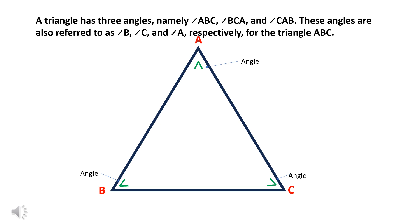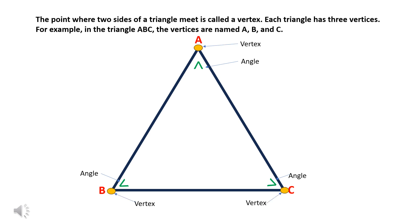The point where two sides of a triangle meet is called a vertex. Each triangle has three vertices. For example, in triangle ABC, the vertices are named A, B, and C.